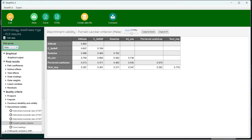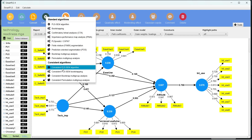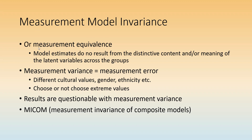The next step is to test for measurement model invariance, also called measurement equivalence. This ensures that the estimates for both groups do not result from different content or meaning of the latent constructs across groups. This is important because respondents from different nationalities, cultures, or genders may interpret questionnaires differently, and we need to confirm that observed differences reflect actual group differences rather than measurement artifacts. The procedure is called MICOM — Measurement Invariance of Composite Models — in SmartPLS 4.